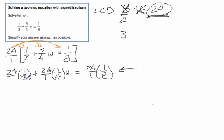If we cross-cancel here, 3 will go into 24 8 times. And so we just end up with an 8. 4 will go into 24 6 times. 6 times 3 is 18. And we don't want to forget that w. And then here, 8 will go into 24 3 times. So that's just going to equal 3.